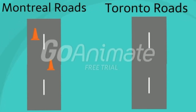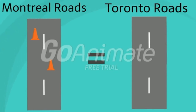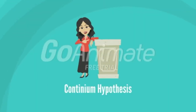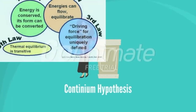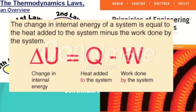A continuum approach would look at the roads of Montreal as if they are the roads of Toronto, meaning the Montreal roads would be considered smooth sailing and all the holes would be completely disregarded. Let the reason for this presumption be as a mental placebo effect so that it helps the driver feel more comfortable. This presumption of idealizing the Montreal roads to that of Toronto is the continuum hypothesis — the same type of hypothesis adapted in classical thermodynamics. In classical thermodynamics, this continuum approach enables us to treat properties as point functions and assume properties change on a continuous basis, thus enabling us to apply various laws, principles, and formulas to better analyze, understand, and expand our knowledge on thermodynamics.